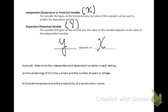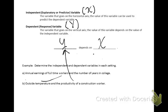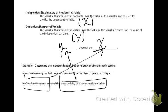Here's another example. Would outside temperature depend on the productivity of a construction worker, or would productivity depend on outside temperature? If it's hot outside, someone's probably not likely to work as much. If it's extremely cold, you may not work as much. But if the temperature is very nice and pleasant, you're probably going to be pretty productive. So in this case, outside temperature is the independent variable and productivity is the dependent variable.